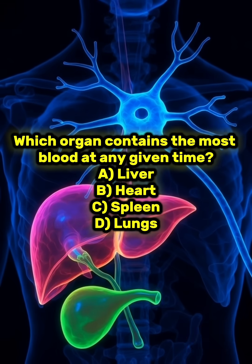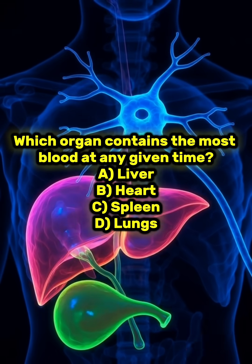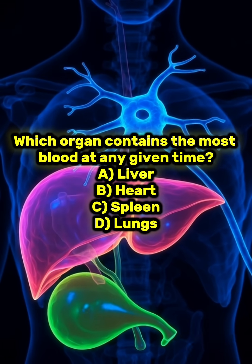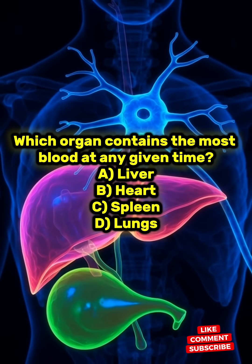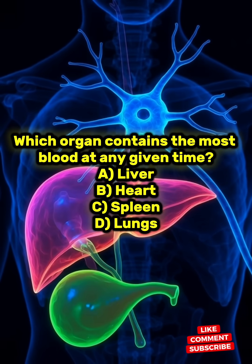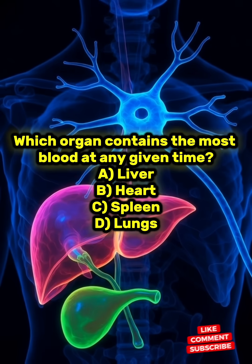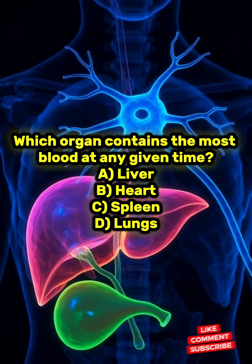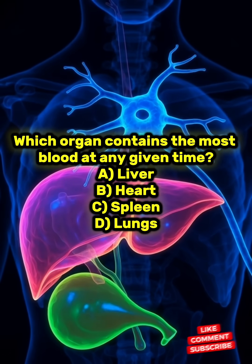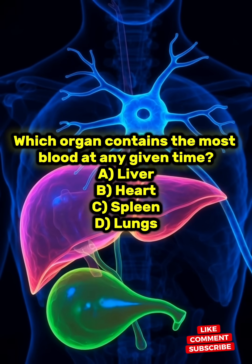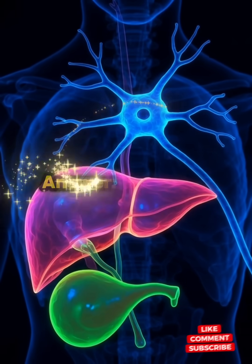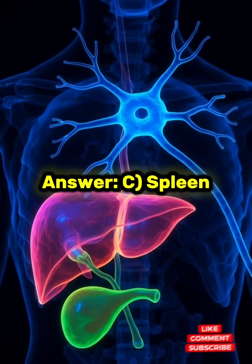Which organ contains the most blood at any given time? A) Liver, B) Heart, C) Spleen, D) Lungs. Answer: C) Spleen.